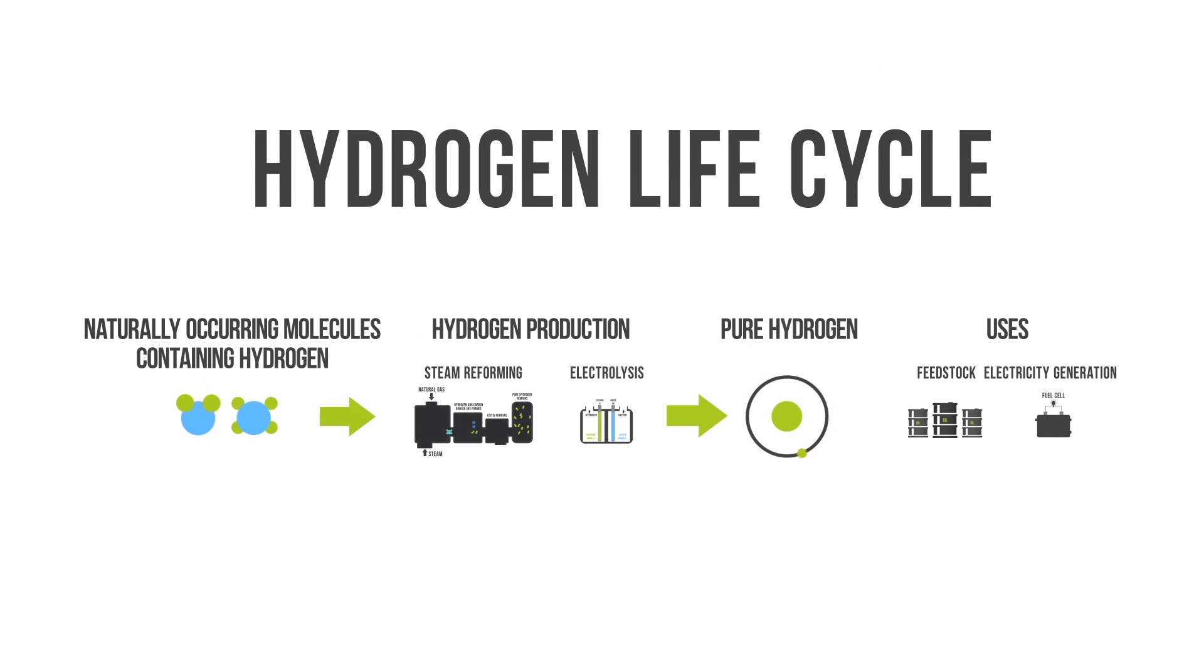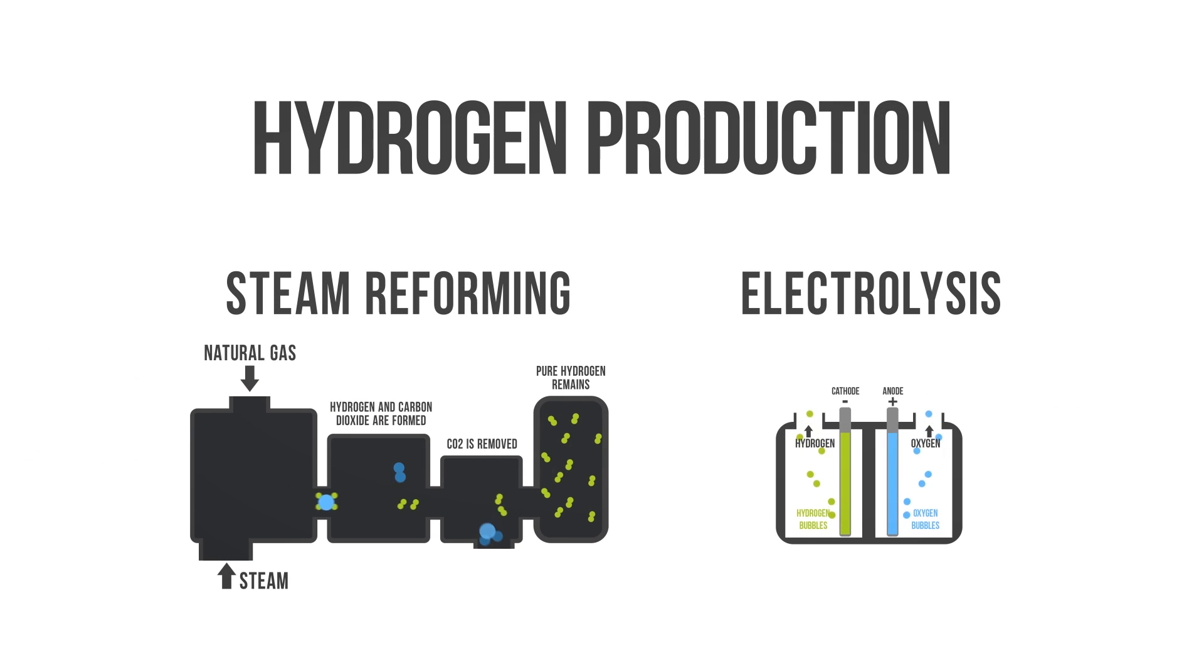The tricky part of hydrogen as a fuel source is getting it in its pure form. Hydrogen is primarily produced using two methods: steam reforming and electrolysis, also known as water splitting.